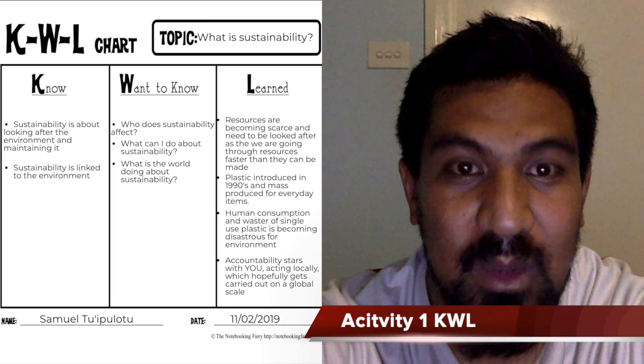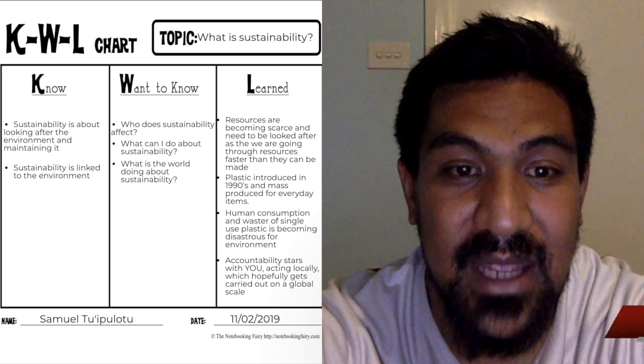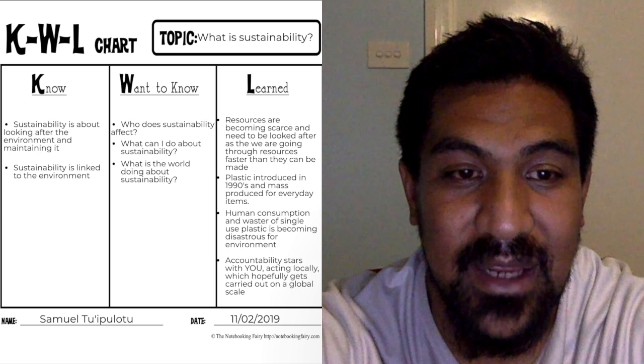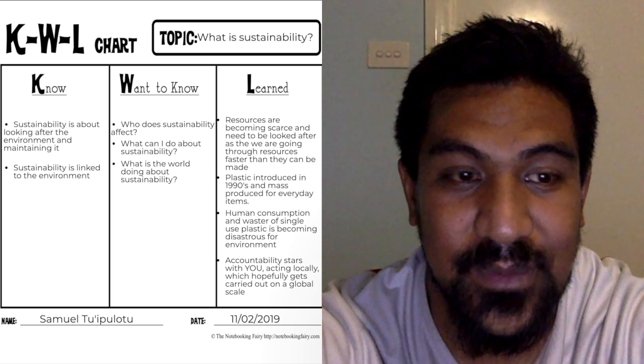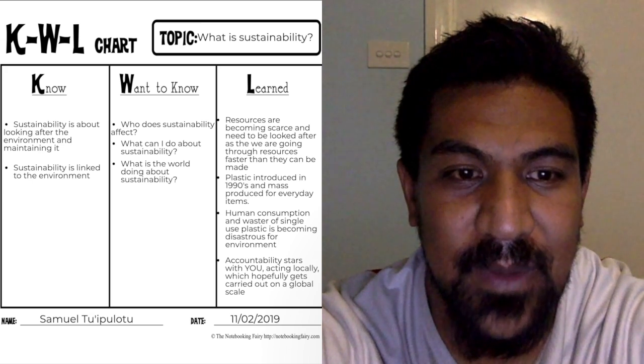In order to immediately engage students on the topic of sustainability, students will be required to watch a short film, 'What is Sustainability?' Here you can see the KWL sheet, which is filled out and placed in the Student Learning Journal. The curriculum components of this activity include prior knowledge of environmental and human influences on the location and characteristics of a place, and the management of spaces within them, types of resources — natural, human, capital — and the ways society uses them to satisfy the needs and wants of present and future generations.